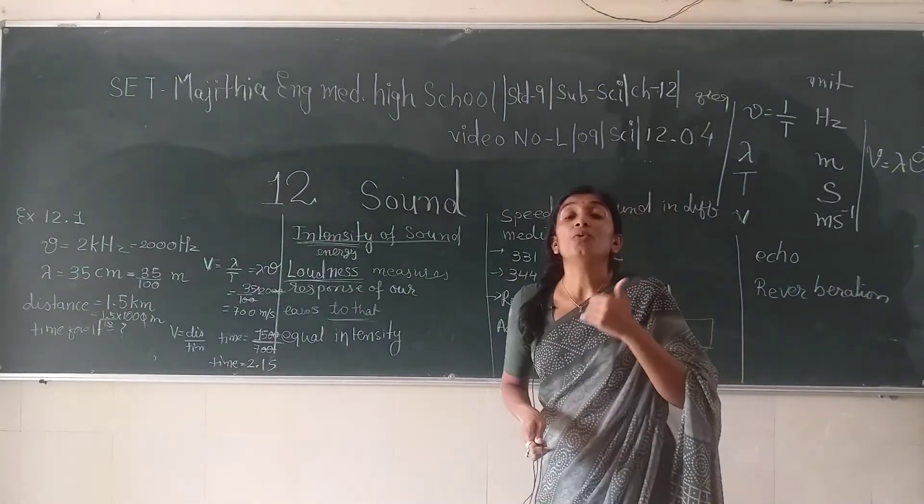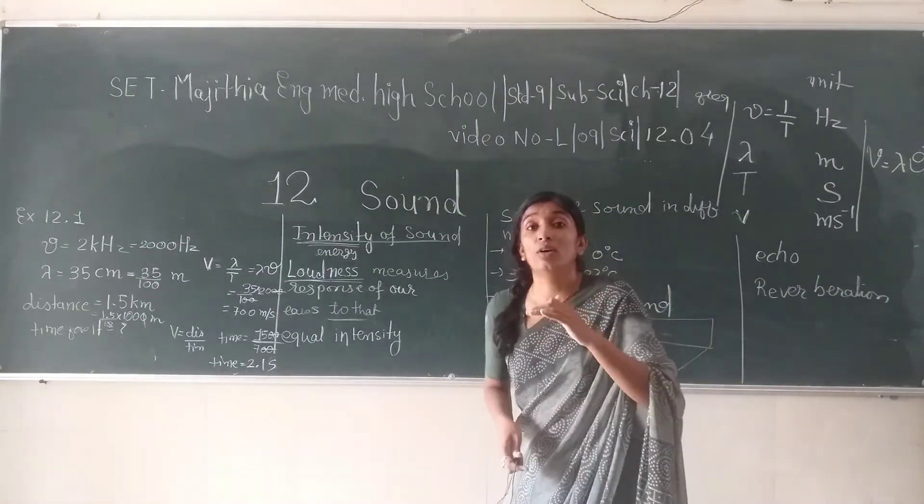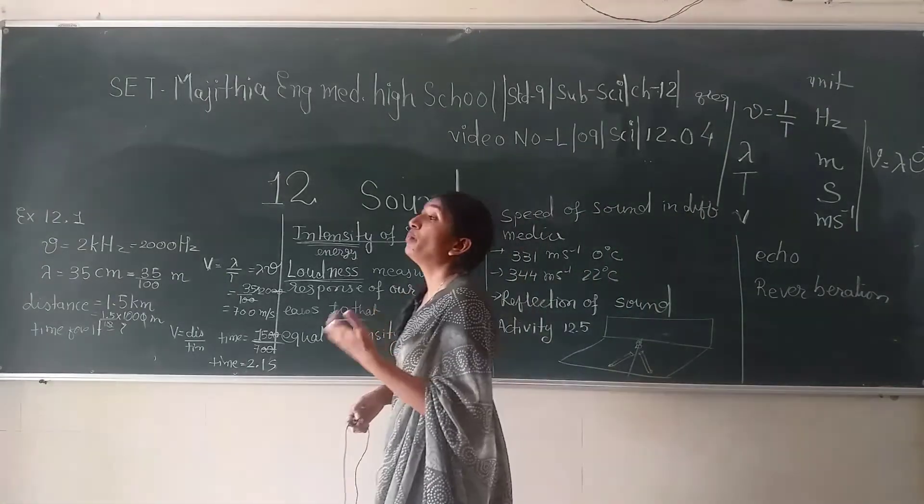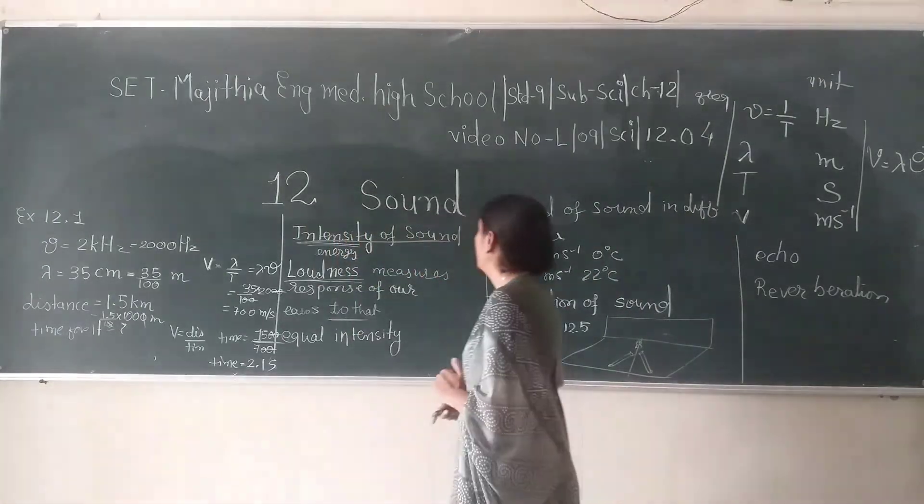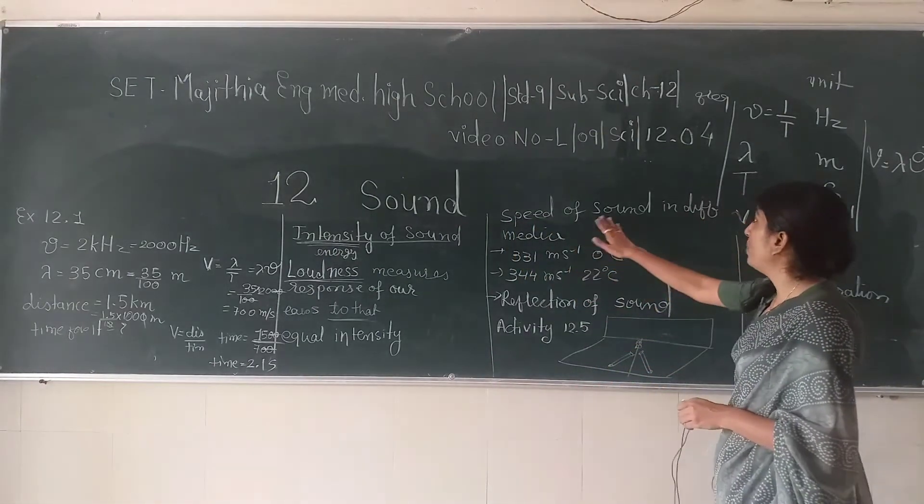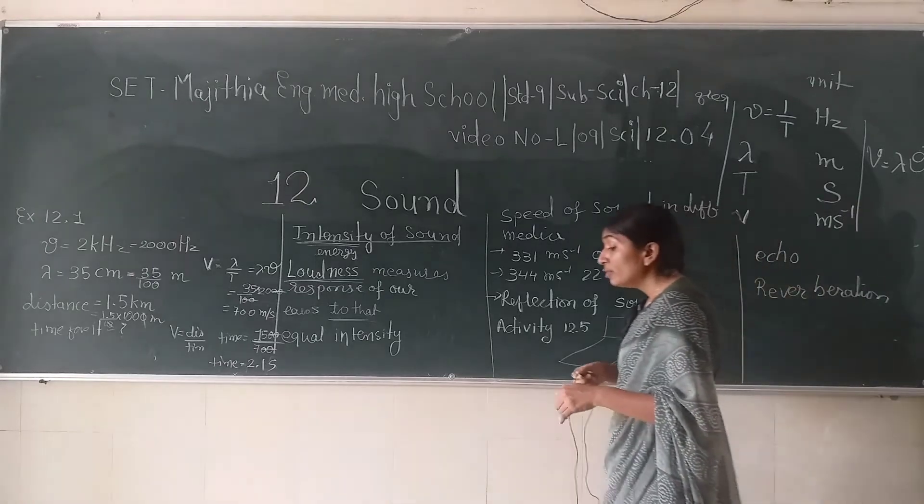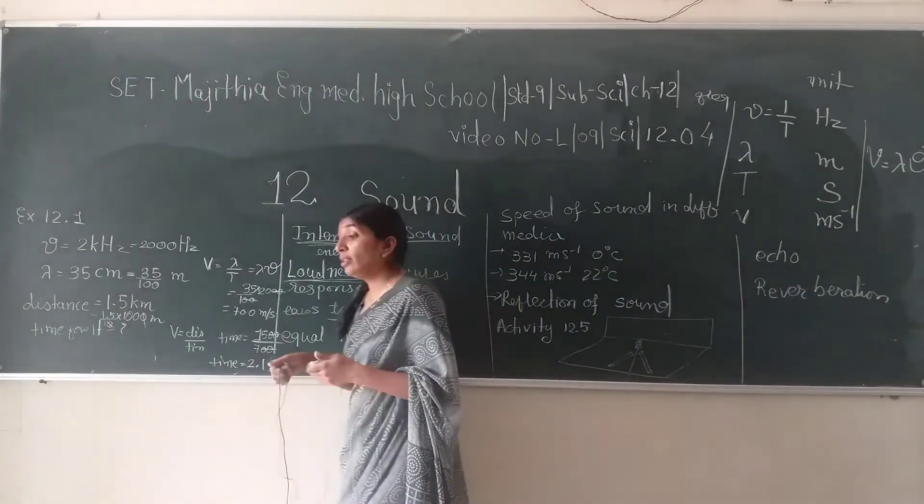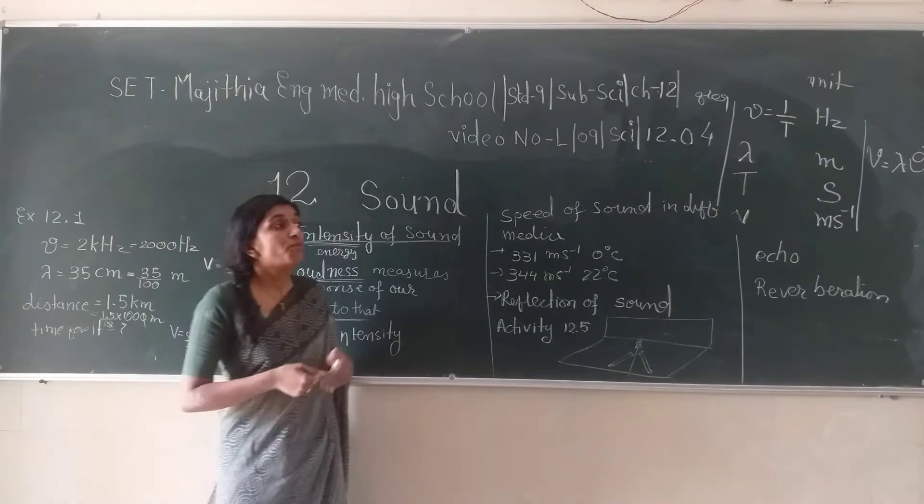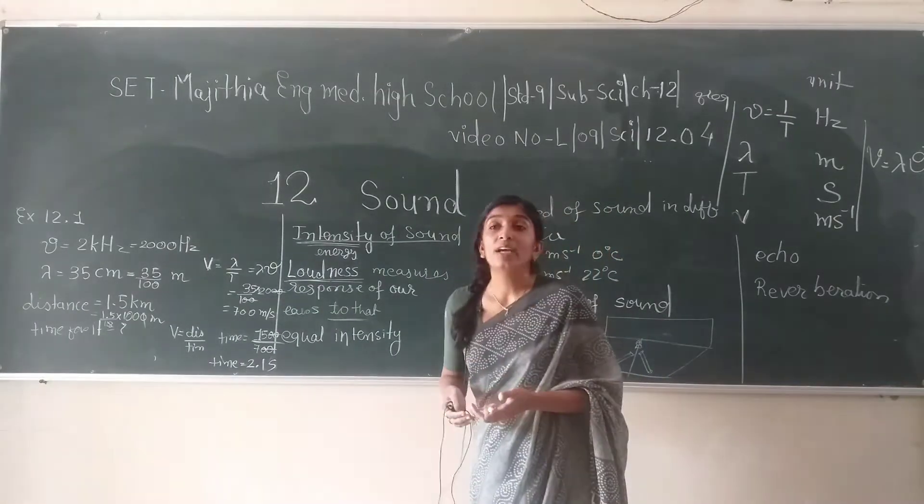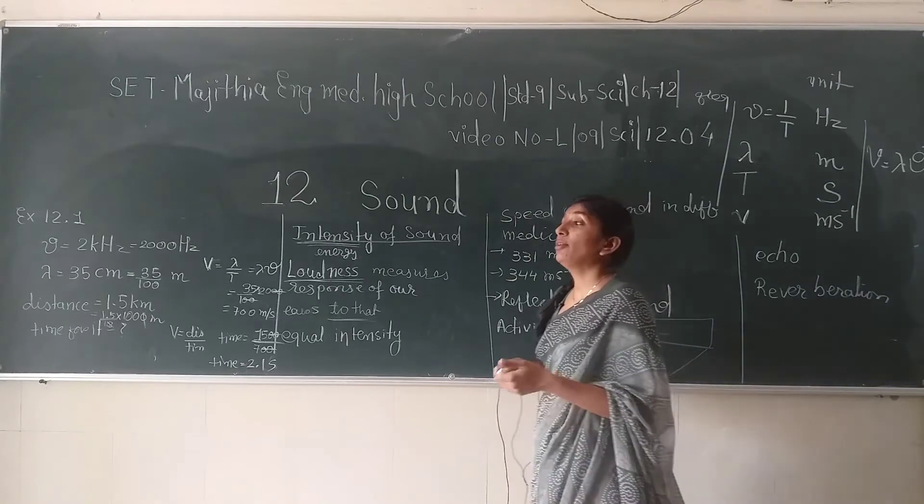Two sounds which are exactly equal in intensity could feel loud or soft to you because your ear responds that way. Next is speed of sound in different media. The speed of sound depends on the medium, how dense the medium is. For example, if you have solid, the frequency of sound would be more. If you have liquid, the frequency of sound would be lesser, and if you have gaseous medium, then frequency of sound is least.